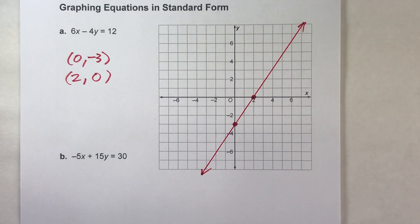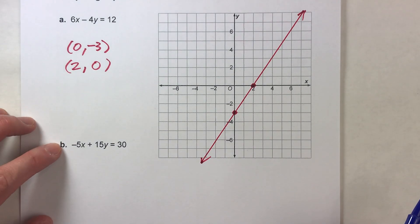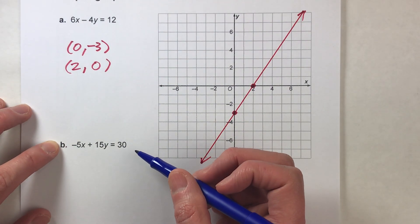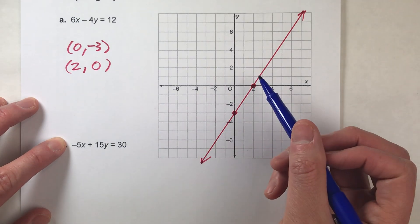Let's do one more example to make sure you get it. All right. So the second one, we've got negative five x plus 15y equals 30. All right. Again, we're going to use the intercepts to figure out what our line is going to look like. So let's start with x being zero.